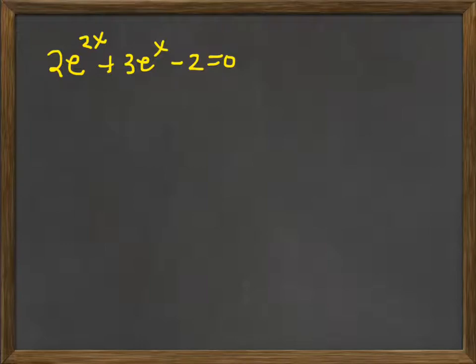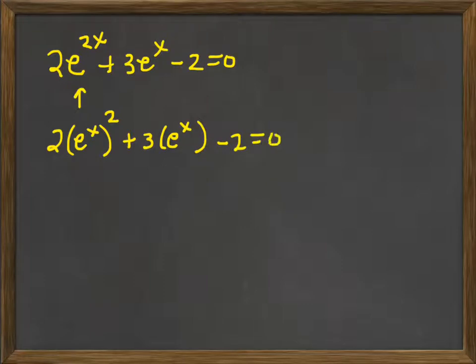Now this one is a little bit harder to see because we have to remember our exponential rules. So if I rewrite this e to the 2x and remember that a power to a power is multiplied, I can rewrite this as 2 times e to the x squared, because if I raise x to the 2 that's the same as just multiplying x times 2. So plus 3, if I put this in parentheses it might be easier to see, plus 3e to the x minus 2 equals 0.